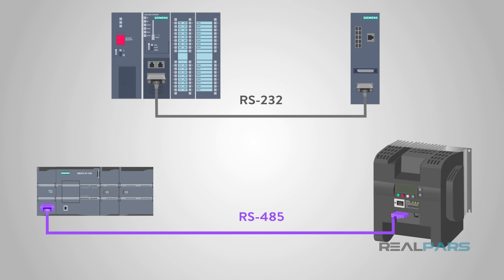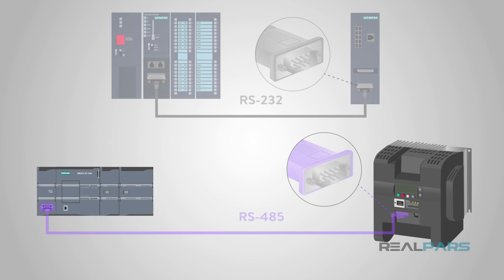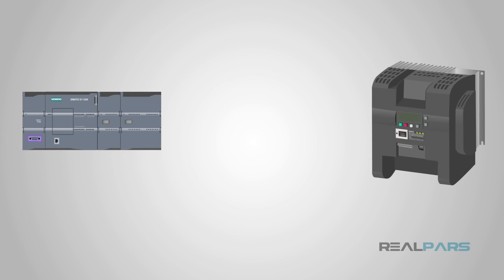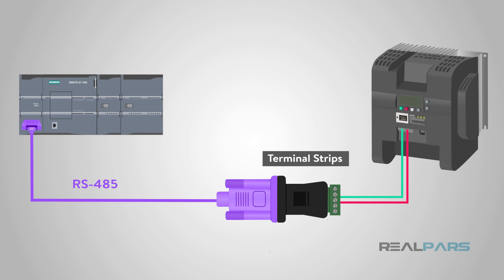Much like RS-232, RS-485 doesn't have an actual standard connector. Many times the old DB9 connector is used. In some applications, terminal strips were used in place of a connector. This helped RS-485 become a widely used and very versatile form of serial communication.